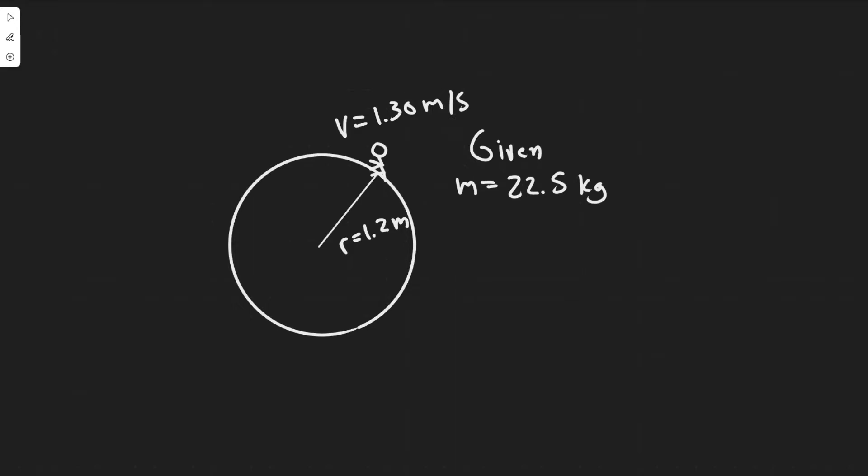Calculate A, the centripetal acceleration of the child, and B, the net horizontal force exerted on the child of mass 22.5 kg.